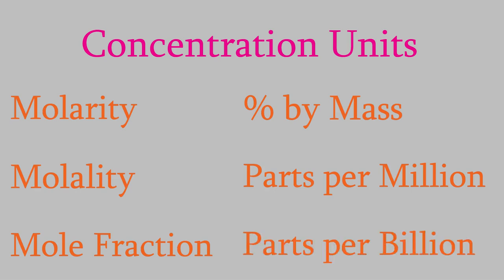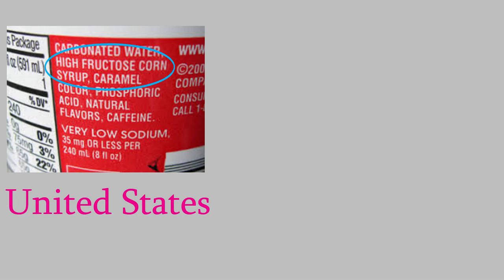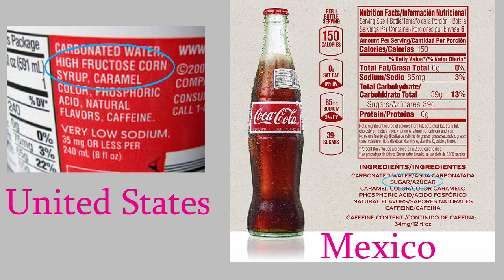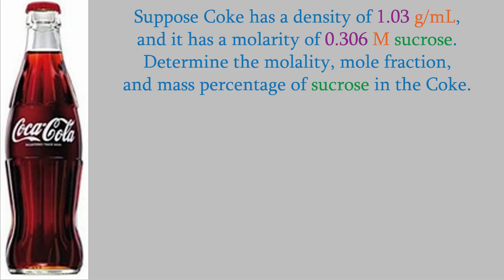Now let's try one more example — starting with one concentration unit and converting it into the others. In some countries, Coke contains cane sugar, also known as sucrose, with a formula C₁₂H₂₂O₁₁. This kind of Coke has a density of 1.05 grams per milliliter, and the sucrose in it has a molarity of 0.306 molar. Let's figure out the molality, the mole fraction, and the mass percentage of the sucrose in Coke.